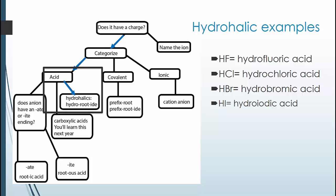Let's start with the hydrohalics because they're the easiest. There are only four species in this group and are made of hydrogen and a halide bonded together. For all of these, we start with "hydro," then we name the ion, then we end it with an "-ic" ending, and finally finish it off with the word "acid." So this becomes hydrofluoric acid, hydrochloric acid, hydrobromic acid, and hydroiodic acid.